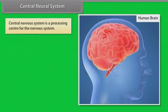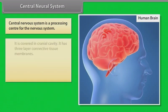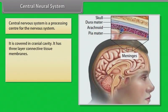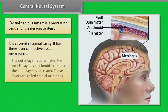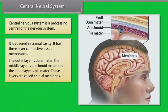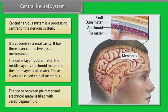The central nervous system is a processing center for the nervous system. It is covered in the cranial cavity and has three-layer connective tissue membranes: the outer layer is the dura mater, the middle layer is the arachnoid mater, and the inner layer is the pia mater. These layers are called the cranial meninges.